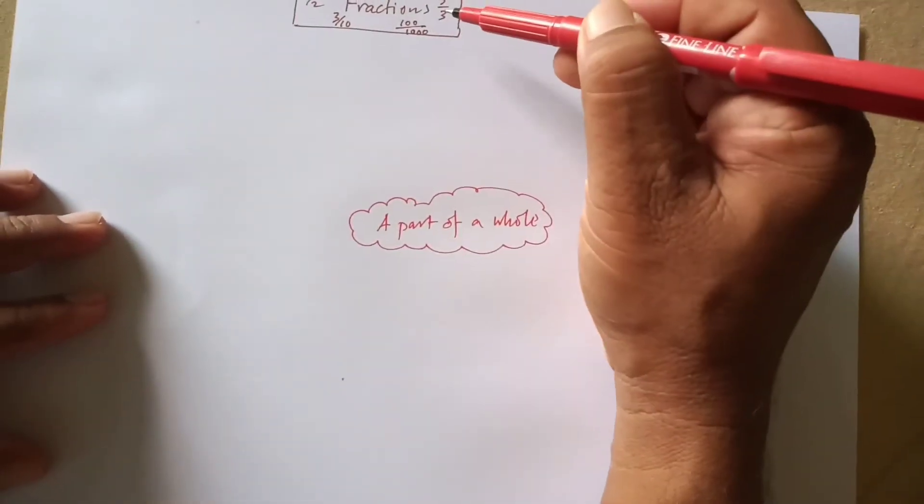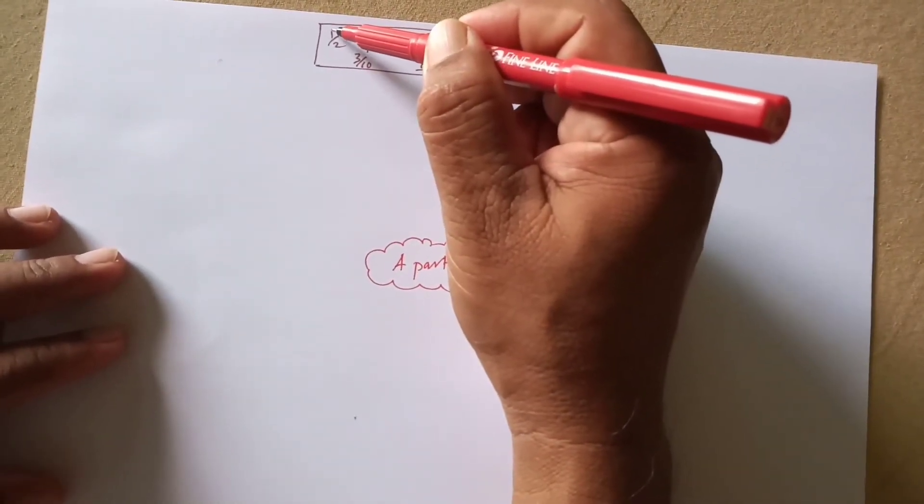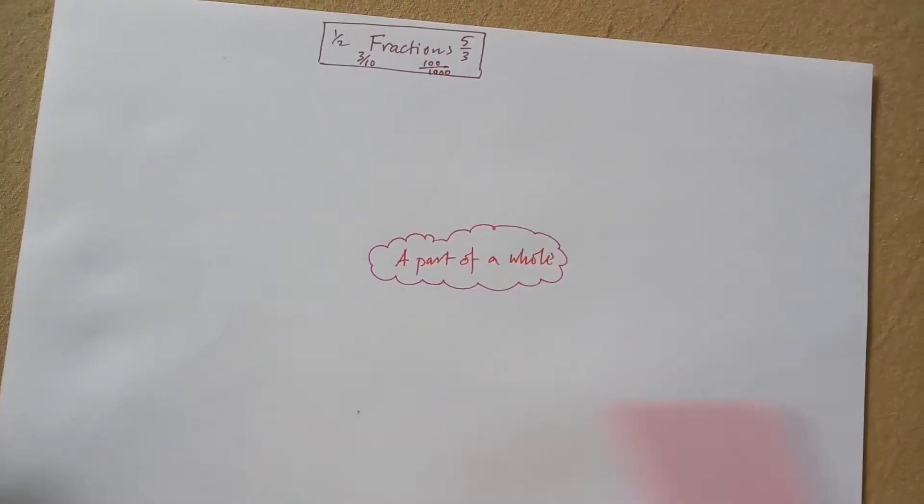If we look at a fraction, we see two numbers. So this is called a numerator and this is called a denominator. So let us write down those terms.